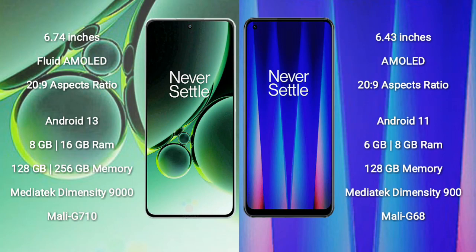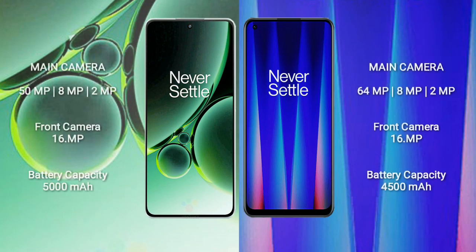OnePlus Nord 3 comes with 8GB or 16GB RAM and 128GB or 256GB internal storage, MediaTek Dimensity 9000 processor and GPU Mali-G710. OnePlus Nord CE2 comes with 6GB or 8GB RAM and 128GB internal storage, MediaTek Dimensity 900 processor and GPU Mali-G68.